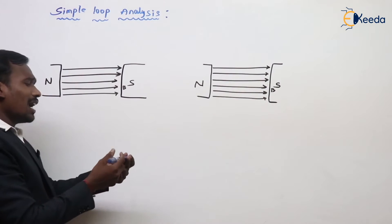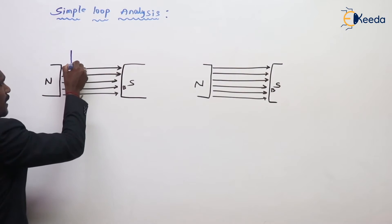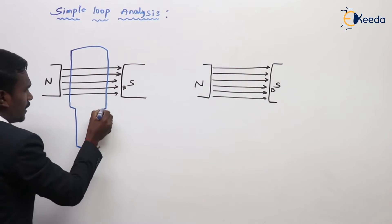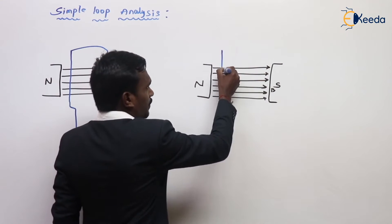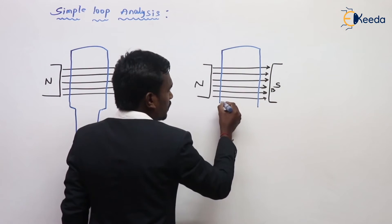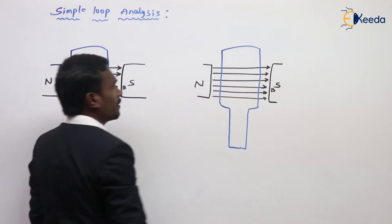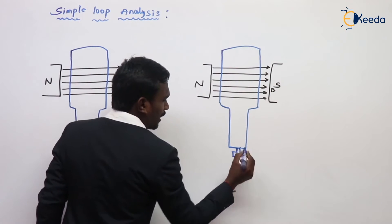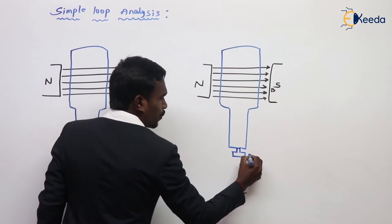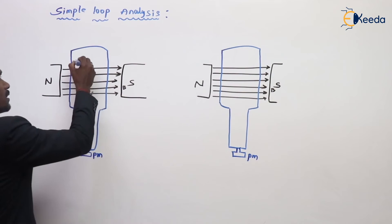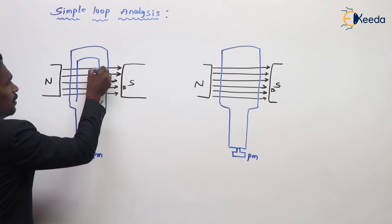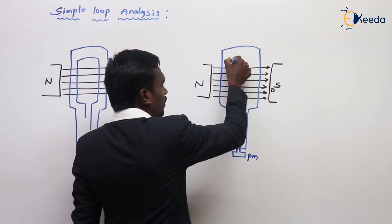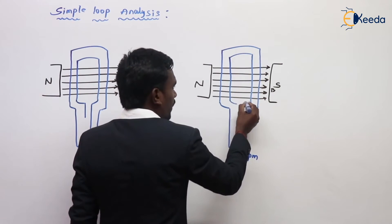Here we should take the armature. This is my armature, and this armature is connected to a prime mover. We are giving the prime mover input. In this armature, we have armature conductors. For example, this is my armature coil.